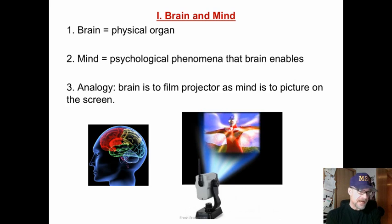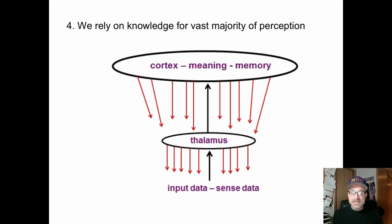First of all, there's a difference between brain and mind. Brain is the physical organ, that gray blob of jelly that's all crinkled and sits atop of your cranium. Mind is the psychological phenomenon that the brain creates. It is consciousness, what we are aware of. An analogy is brain is to film projector as mind is to picture on the screen. The brain is the organ.